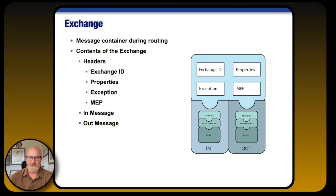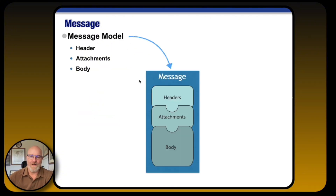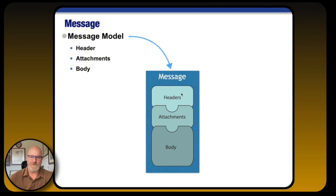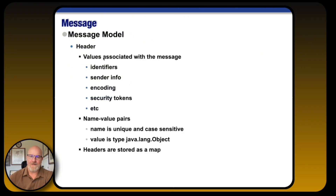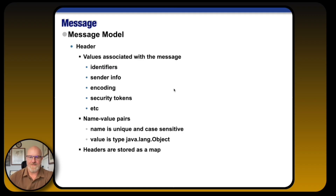The first main piece I want to cover is the message, and this applies to both the in and the out. What you have within the message is headers, attachments, and body. All of these together give you a very wide variety of ways of storing data as you move it along the pipeline. The header itself contains values associated with the message — identifiers, unique IDs, sender info, encoding, security tokens, etc. You also have name-value pairs, and this is where the power comes in — you can do pretty much anything you want here.